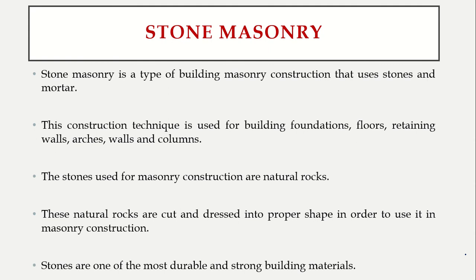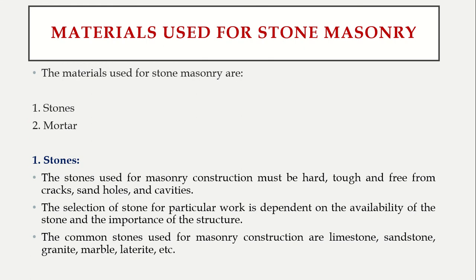Stone masonry is more durable. Coming to the materials used in stone masonry, we have only two materials: stones and mortar. Stones plus mortar is called stone masonry; bricks plus mortar is called brick masonry — as simple as that. We'll discuss the first material, which is stones.